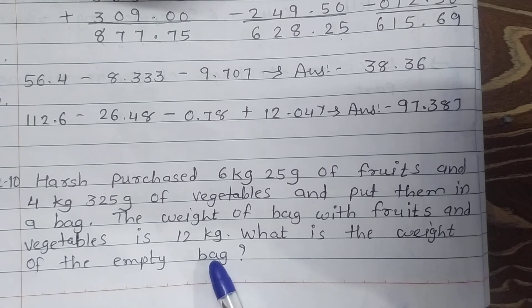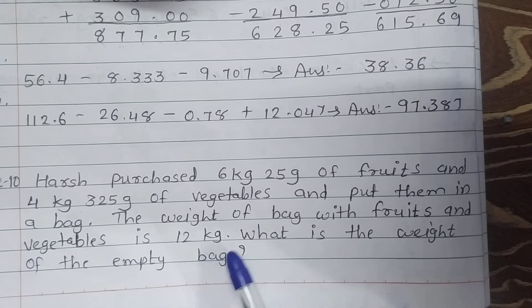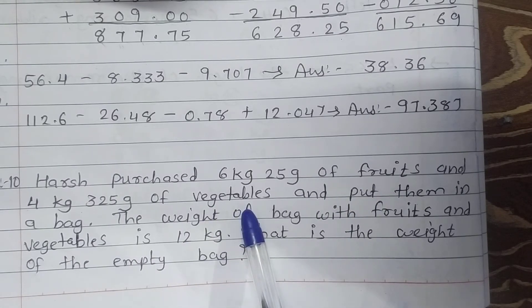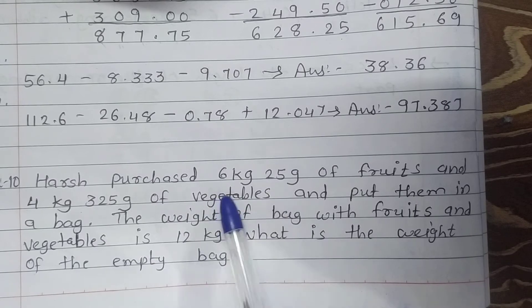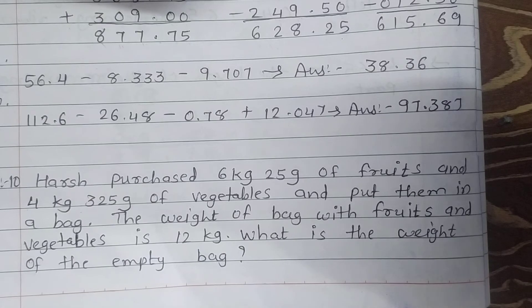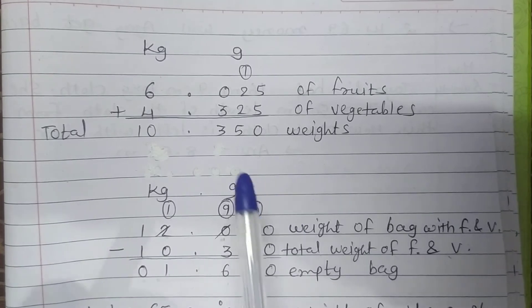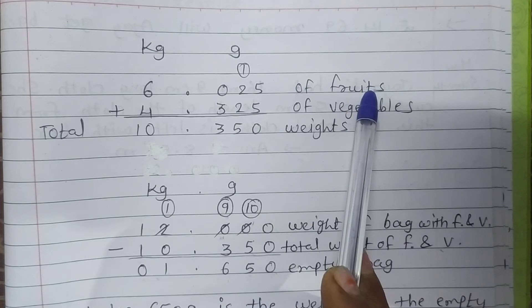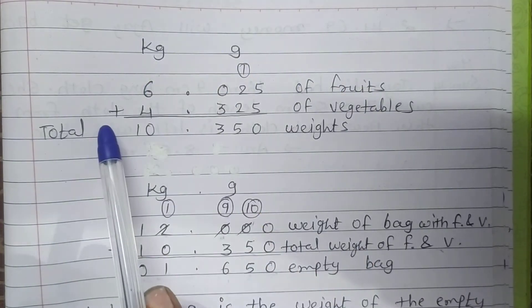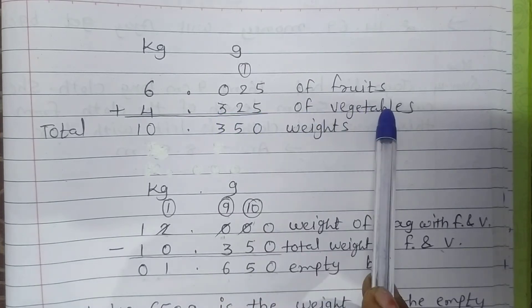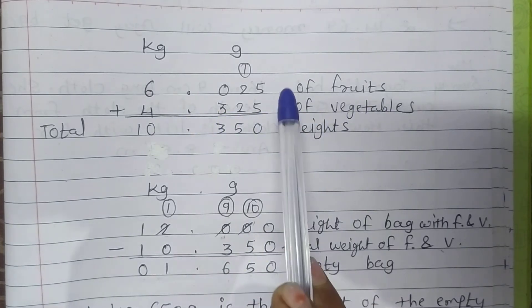So students, first of all what we will do? First of all, do addition of the weight of fruits and the weight of vegetables. Then we will subtract this answer from the 12 kg which is total bag weight, then we will get the answer of weight of empty bag. Look at here, 6.025 is weight of fruits.